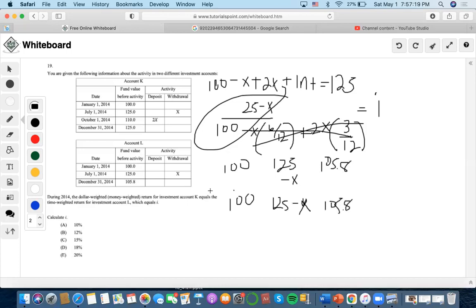Now we can make a time dollar-weighted equation. So we circle these, then we make the equation of 125 out of 100, times 105.8 over 125 minus x, equal to 1 plus i.